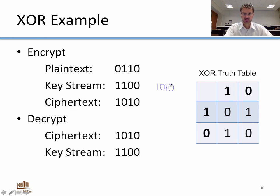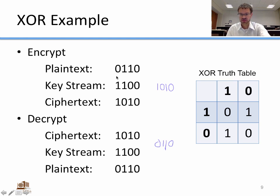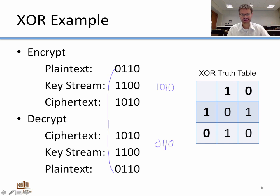To decrypt, we take cipher text 1010 and exclusive OR it with the same key stream 1101: 1 XOR 1 = 0, 0 XOR 1 = 1, 1 XOR 0 = 1, 0 XOR 0 = 0. We get 0110 — which matches the original plain text. So we encrypt by exclusive ORing with the key stream and decrypt by exclusive ORing with that same key stream.